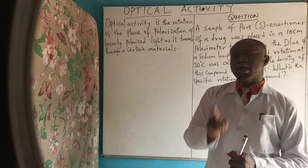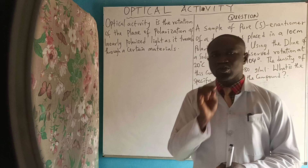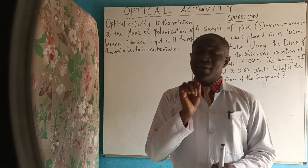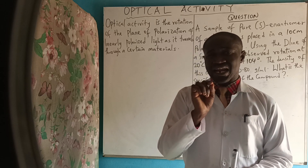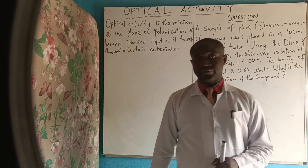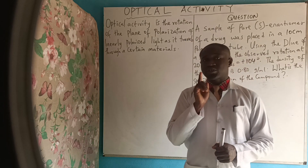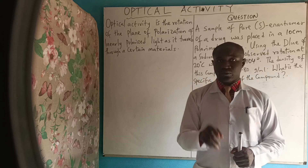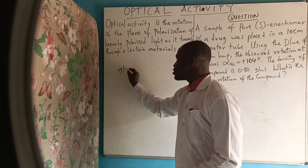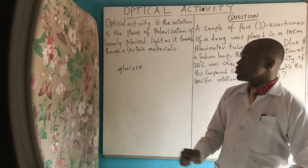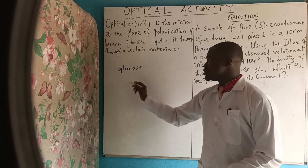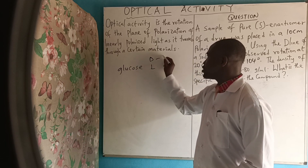For a molecule, substance, or drug to be called an optically active substance, it means that it has chiral centers. One example of a substance that is optically active is glucose. This glucose can be called D-glucose or L-glucose.